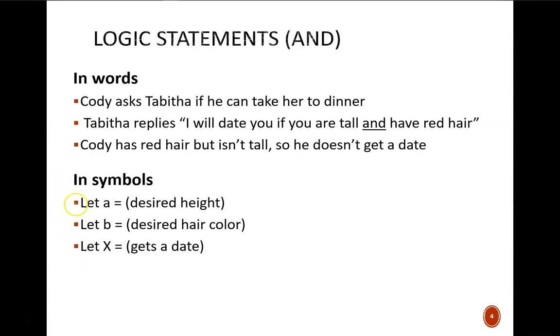Arbitrarily, we let the variable a represent whether or not Cody has the desired height. One here would represent true, or the idea that the desired height is met. We do a similar thing for the other input condition, hair color, and the output condition, whether Cody gets a date. This may seem like a simple step, but it is critical to define clearly what each symbol means. Otherwise, they are just letters on a page.